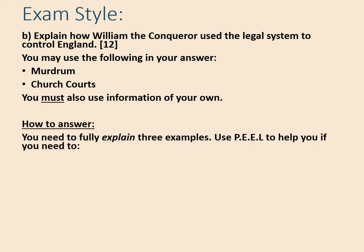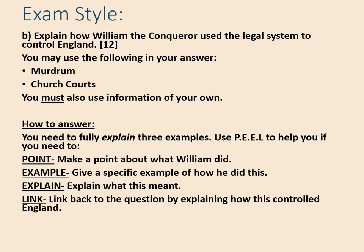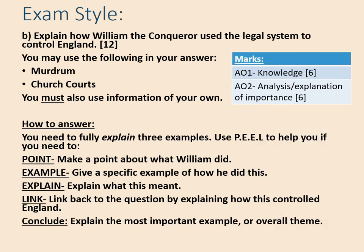Here's a suggested approach: fully explain three examples using the system of point, example, explain, and link. Make a point about what William did, give a specific example of how he did it, explain what this meant, and then link it back to the question by explaining how this controlled the English people. Without linking back to control, you risk losing those AO2 analysis marks. Finally, you'll need a conclusion explaining the most important example or the overall theme. AO1 knowledge is six marks; AO2 analysis and interpretation is also six marks. Pause the video and spend about 15 to 18 minutes on this.